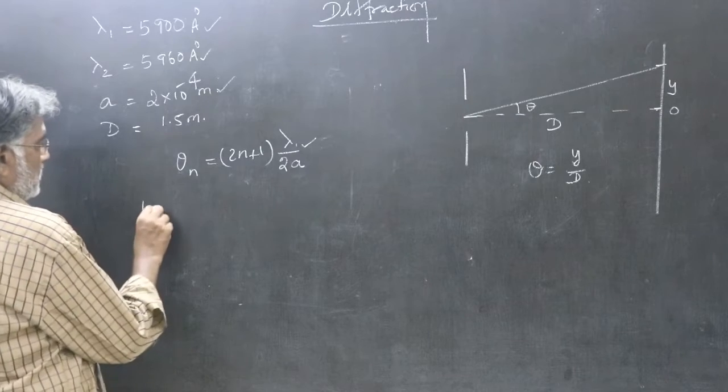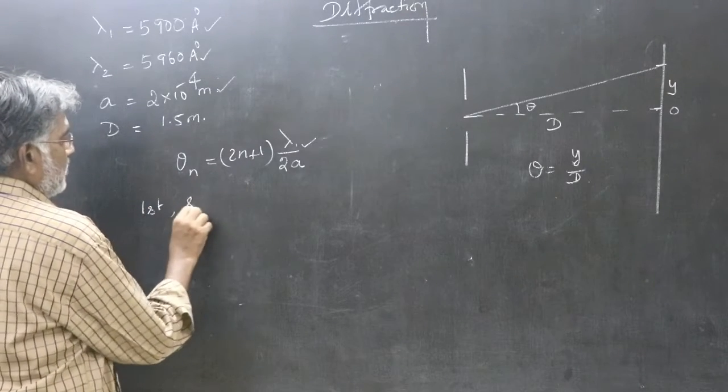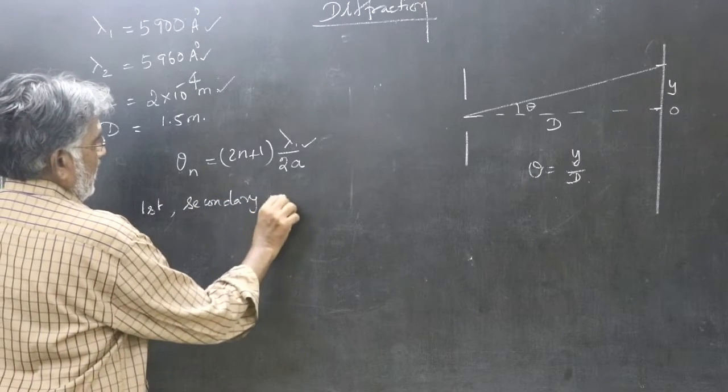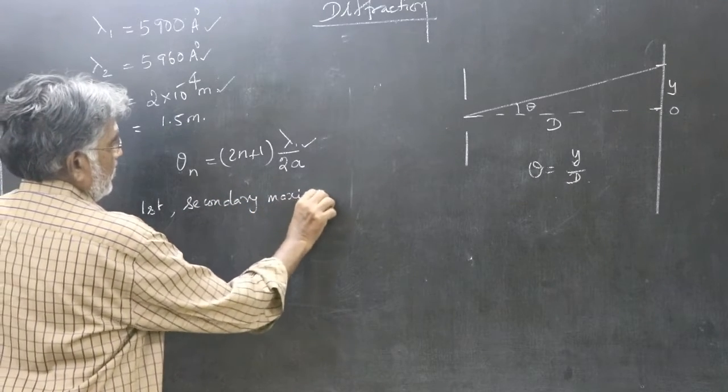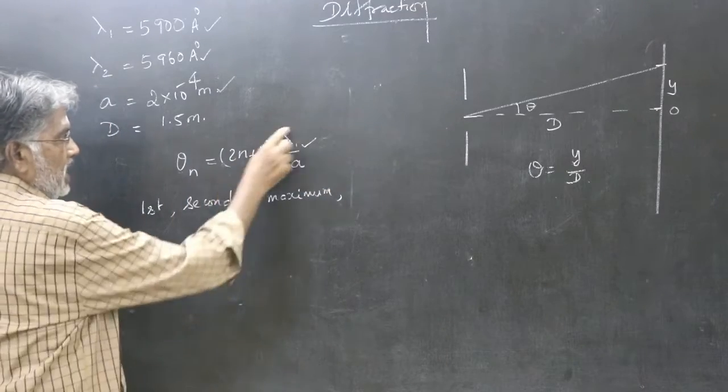So, for first secondary maximum, put n as 1. So, 3 lambda by 2a.